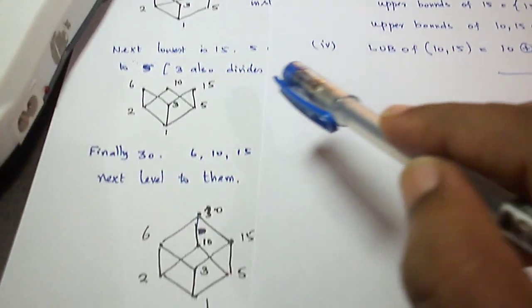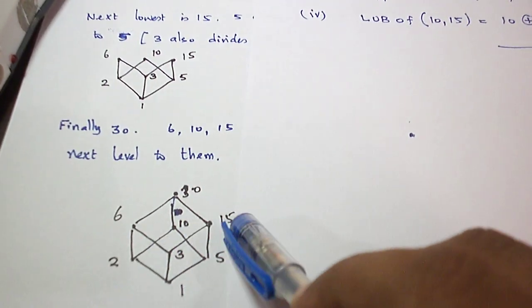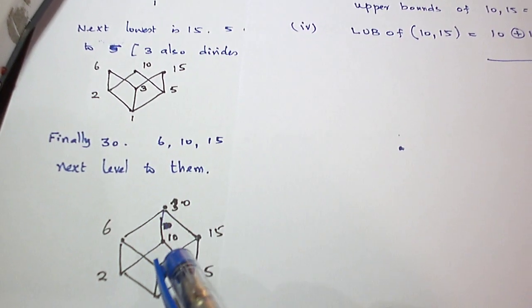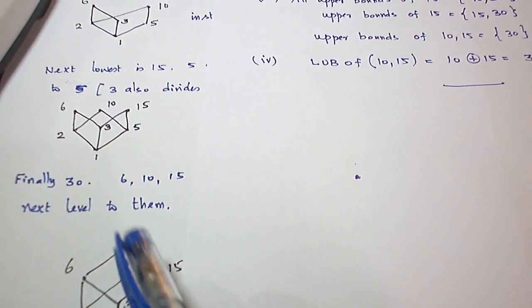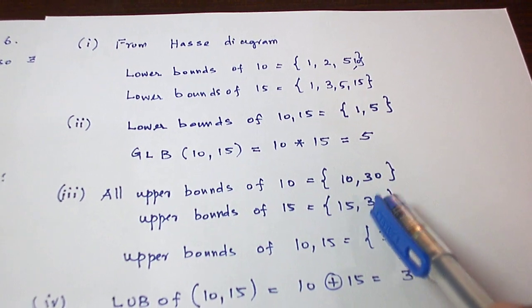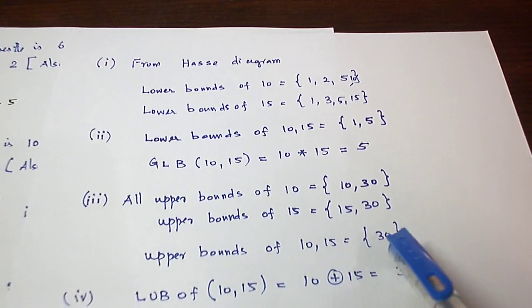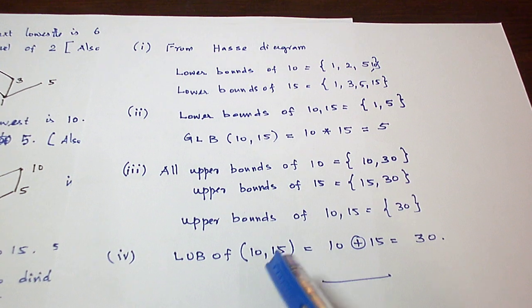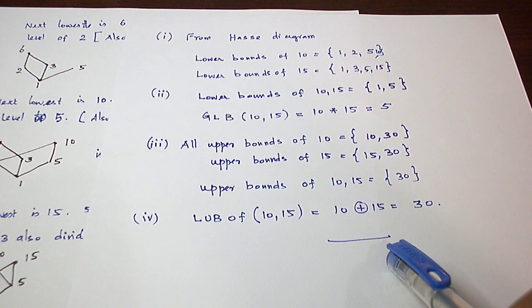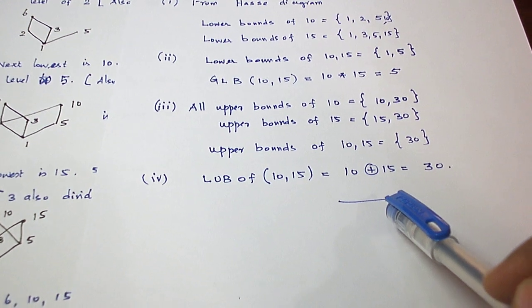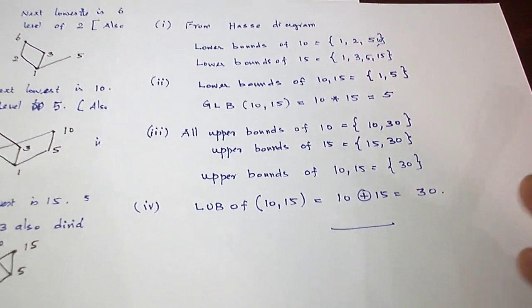If you are asked to find the upper bounds for 10 and 15, for 10 the upper bounds are 10 and 30, for 15 the upper bounds are 15 and 30. The common upper bounds of 10 and 15 is 30, that is the least upper bound. So 10 plus 15 is 30. With this the problem is over. Let us see another problem in the next video. Thank you.